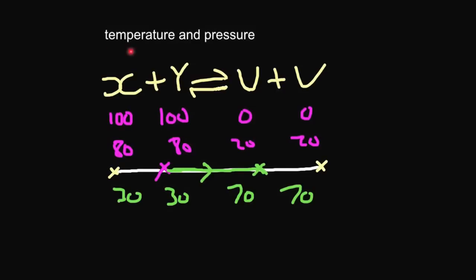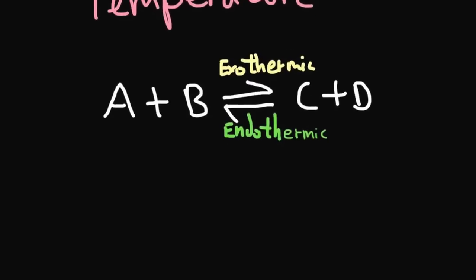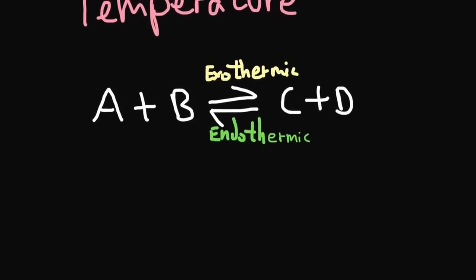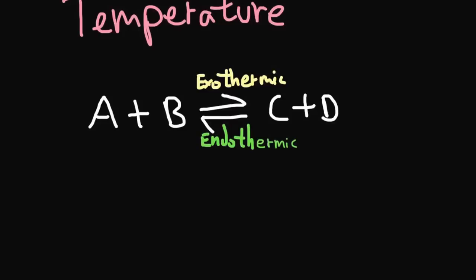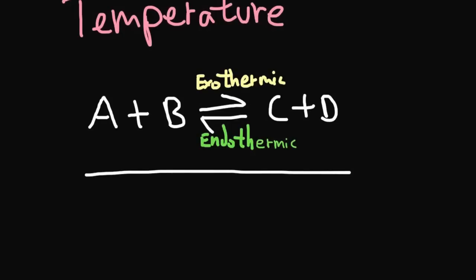First off, we're going to consider temperature. To be able to understand how temperature affects a reaction in equilibrium, we have to know about exothermic and endothermic reactions. Exothermic reactions are reactions that give out heat, and endothermic reactions are reactions that take in heat. If a reaction is exothermic in one direction, it must be endothermic in the opposite direction. In this example, the equilibrium for this reaction lies about here, so that means we've got roughly 70% A and B and 30% C and D.